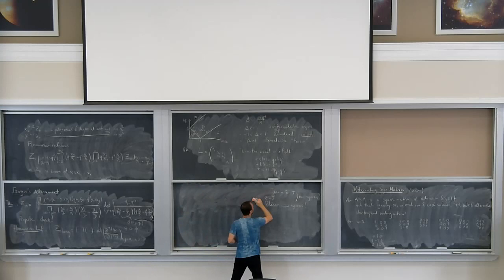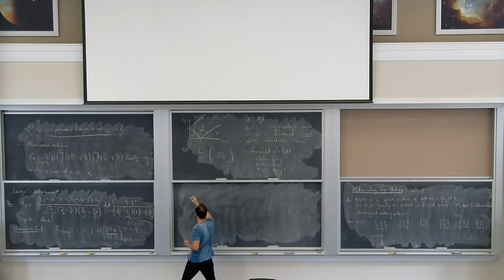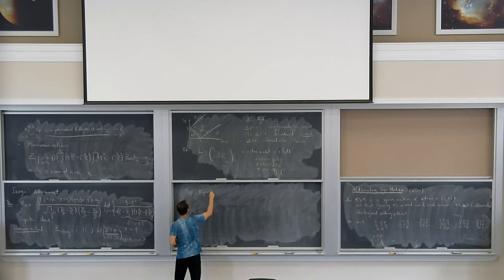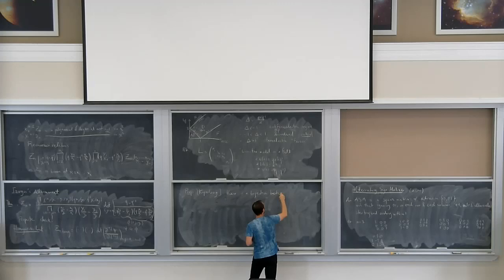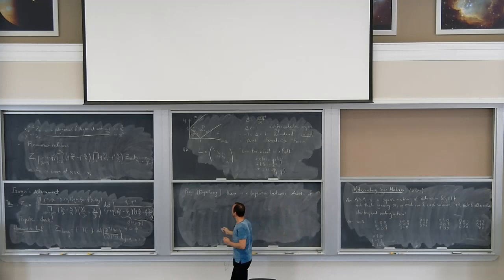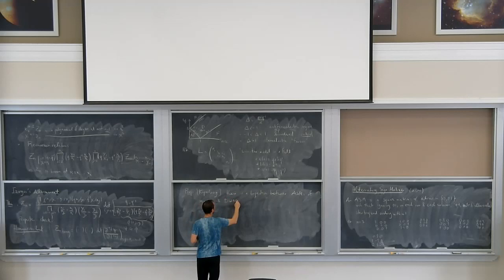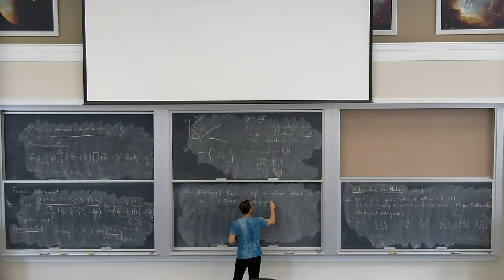All I care about here is the following very simple fact, first observed by Kuperberg: there is a bijection between ASMs of size n and six-vertex configurations of size n with domain wall boundary conditions.